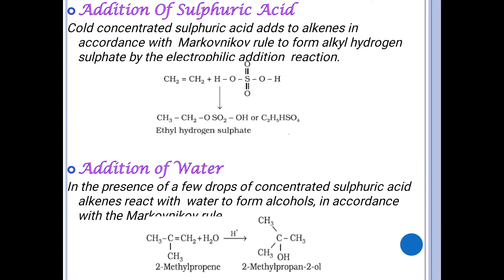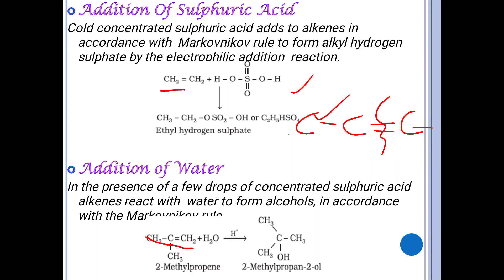For example, concentrated sulfuric acid adds to alkenes in accordance with Markovnikov's rule to form alkyl hydrogen sulfate. In the presence of a few drops of concentrated sulfuric acid, alkenes also react with water in a hydration reaction to form alcohols. A symmetrical carbon means the groups on either side of the double bond are equal; in an unsymmetrical compound they are unequal, and Markovnikov's rule determines the product.